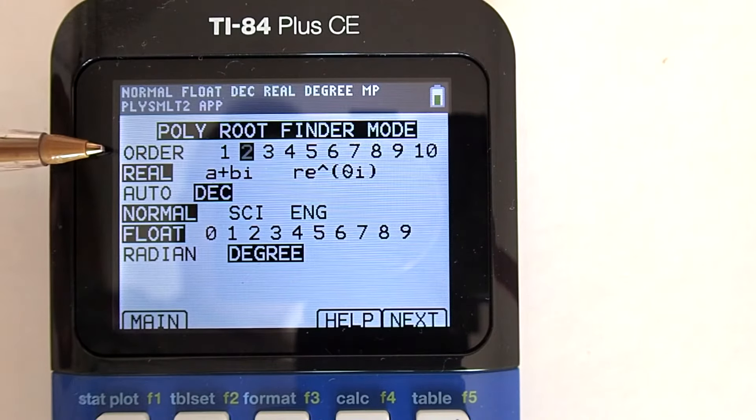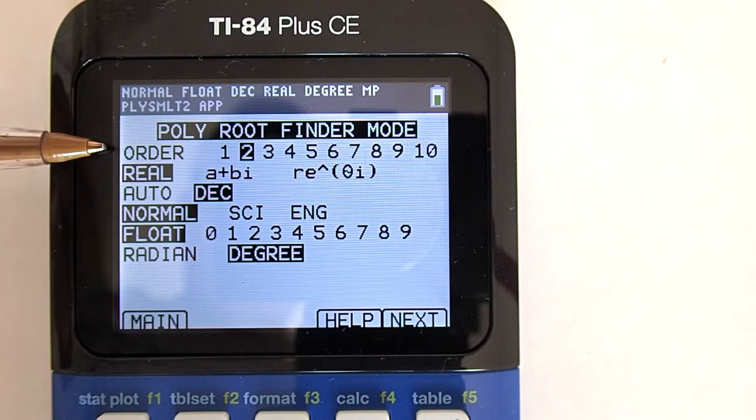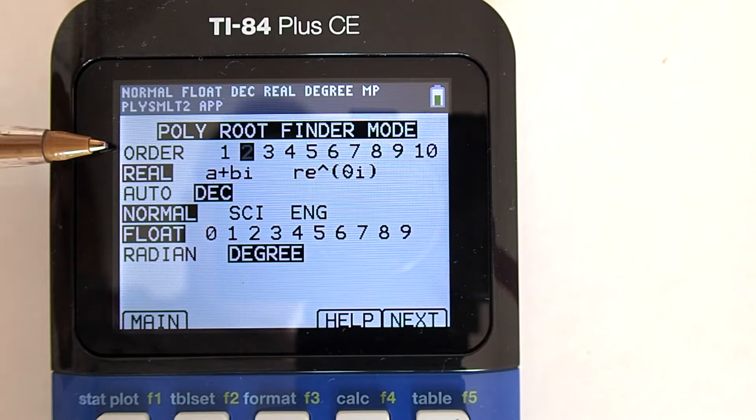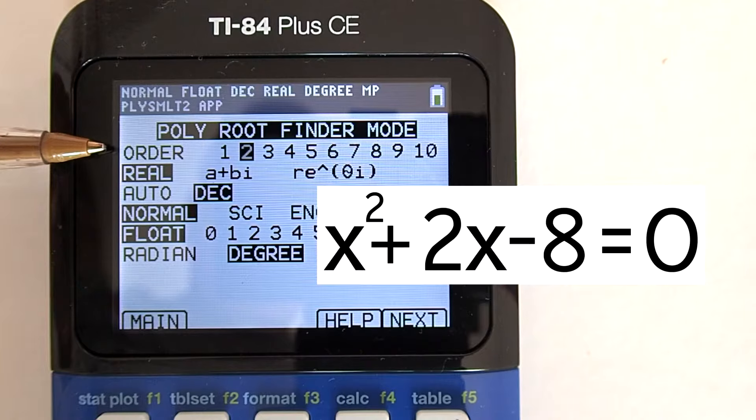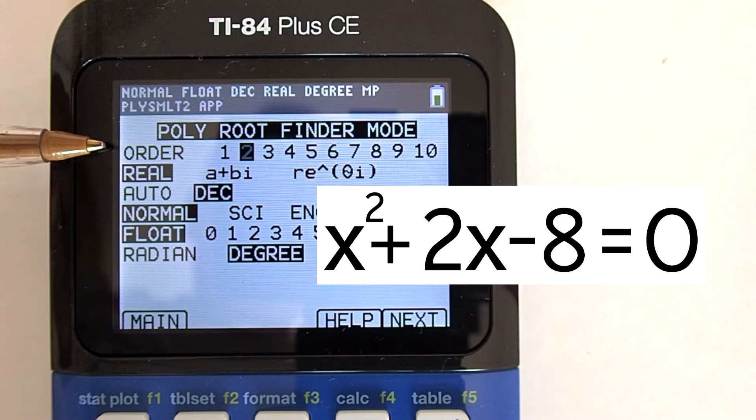This is the order of the polynomial. The order is going to be equal to the highest exponent of the x values of our equation. In this case, our equation is x squared plus 2x minus 8 equals 0. The highest exponent on our x values is 2 on the x squared. So in this Polyn root finder mode, we need to make sure 2 is chosen for order. It is.